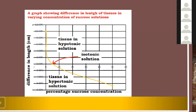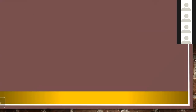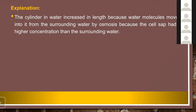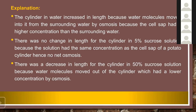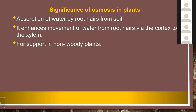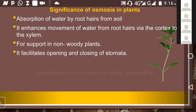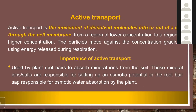Moving on, they finished with active transport. Most importantly, in active transport there is movement of substances against the concentration gradient, and that involves the use of energy. The key things in the definition are: movement from an area of lower concentration to an area of higher concentration, which requires the use of energy, and this may occur across a semi-permeable membrane.